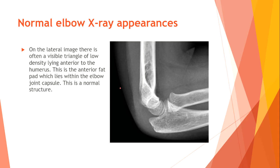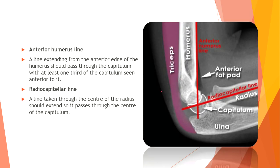Normal elbow x-ray appearances. On the lateral image there is often a visible triangle of low density lying anterior to the humerus — this is the anterior fat pad, which lies within the elbow joint capsule and is a normal structure. The anterior humerus line — a line extending from the anterior edge of the humerus should pass through the capitulum with at least one third of the capitulum seen anterior to it. The radiocapitellar line — a line through the center of the radius should pass through the center of the capitulum.